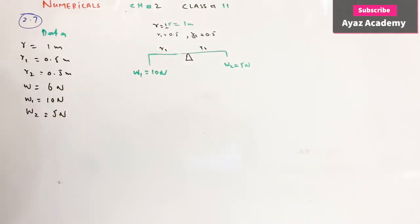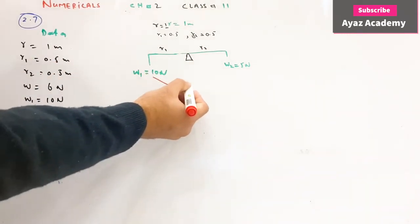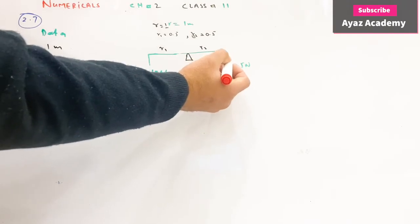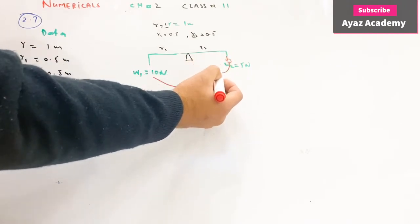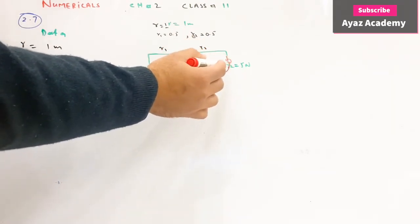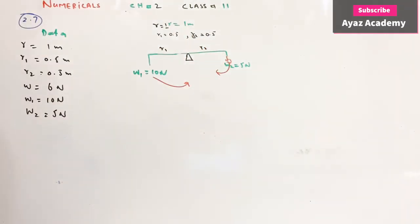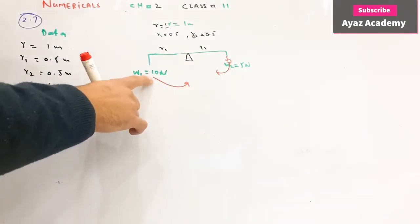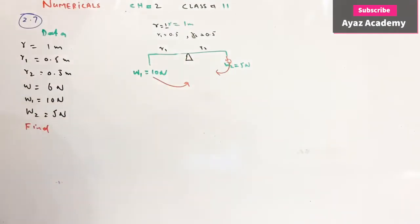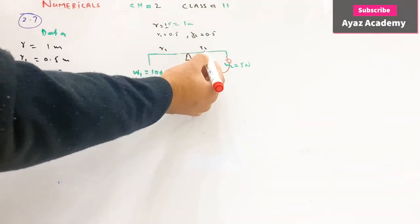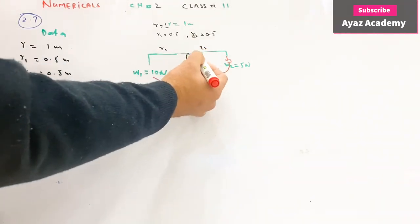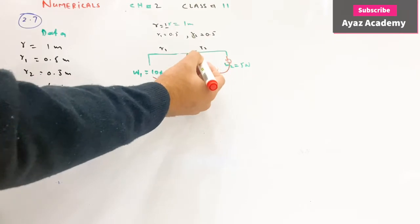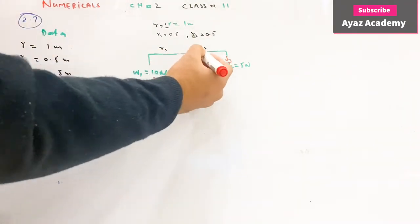Five newton ki weight ki wajah se yeh is direction. Yeh anticlockwise aur yeh clockwise. Question kya kehta hai ki find karay. Ten newton zyada hai aur five newton kam hai. Zahir si baat hai ki is ten newton ki wajah se yeh is direction mein tark paida hoga. Question hamein ye kehta hai kis position pe idhar yeh balance hum karayenge. Five newton hai yeh kam hai, toh idhar ek position hoga jidhar yeh balance hona chahiye.